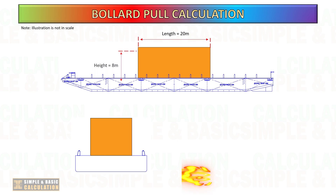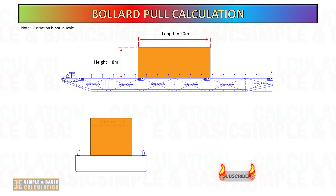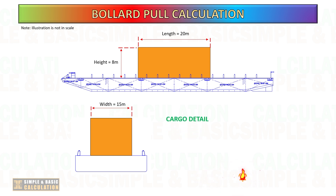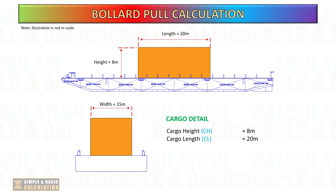Now, assume this is the size of the cargo on top of the barge: length is 20 meters, width is 15 meters, and height is 8 meters. Note that the drawing is not to scale — it is for illustration purposes only.